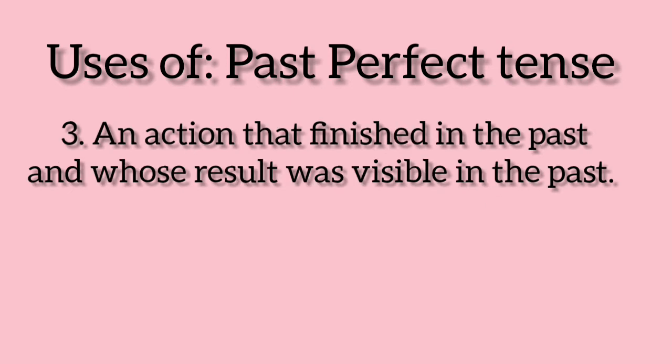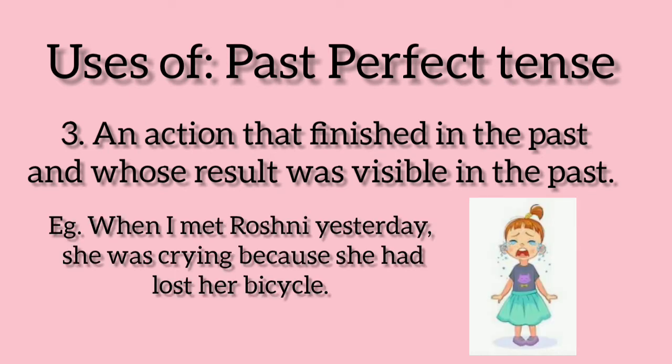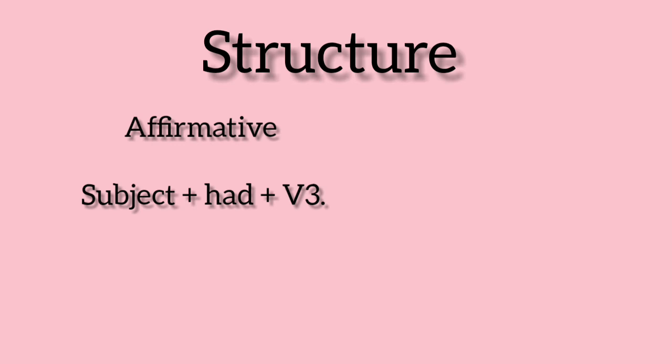The third use is to talk about an action that finished in the past and whose result was visible in the past. For example, 'When I met Roshni yesterday, she was crying because she had lost her bicycle.' The action had already been completed in the past and the result of the crying was also visible in the past. The structure for affirmative sentences is: subject plus had plus verb in the third form plus the remaining part of the sentence.